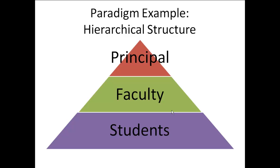In a very traditional hierarchical structure, we would see something that would look like this mental model, where the principal or administrative team is at the top of the pyramid, then faculty are next, and students are next. We could include parents and community here — there could be all kinds of layers to the pyramid. The decision making authority and power rests at the top, and communication and information flows from the principal down to the faculty, from the faculty down to the students.